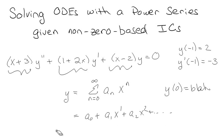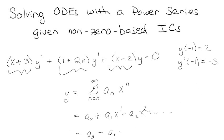Now the problem is that right now I have y at negative one equals two. So I could say okay, well that means it's this evaluated at negative one — and this just keeps going — and I know that equals two, but that doesn't really help me find any values for a₀, because I've just got it in terms of a literally infinite number of other terms.